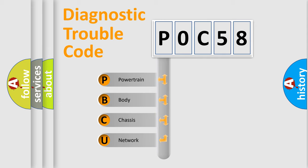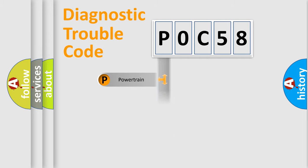We divide the electric system of automobile into four basic units: Powertrain, Body, Chassis, and Network. This distribution is defined in the first character code.